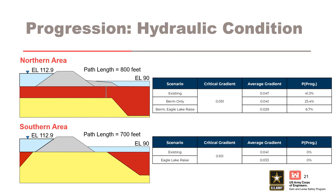The combination of the two flood fighting actions produced a significant reduction in the likelihood of backward erosion piping progression in the northern area. When evaluating the southern area, the average foundation gradient of 0.041 is already well below the critical gradient of 0.1. The raising of Eagle Lake reduced the foundation gradient even further to 0.033. However, the probability of progression of backward erosion piping in the southern area was already very near or at 0 percent. Therefore, the flood fighting efforts did not provide a great benefit for this node in the southern area.